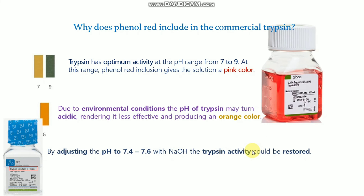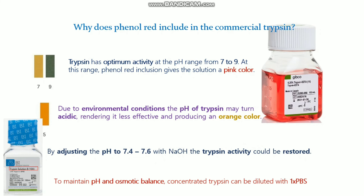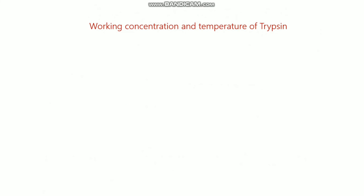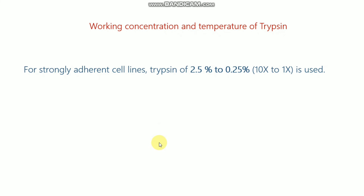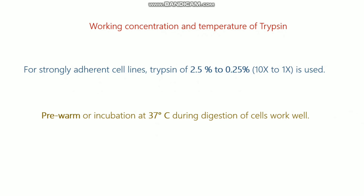There is also concentrated trypsin available. When you have 10x or 20x trypsin, you can dilute it with 1x PBS to maintain pH and osmotic balance. The working concentration for strongly adherent cell lines may range from 0.25% to 2.5%, and pre-warming or incubation at 37 degrees centigrade is the required temperature for trypsin.